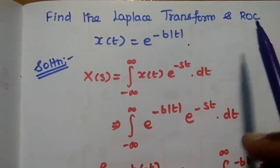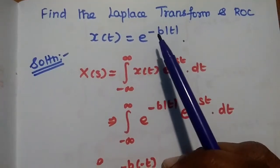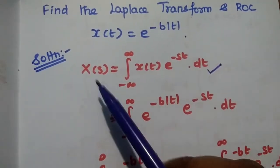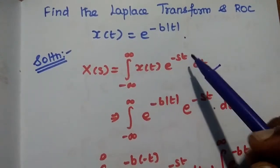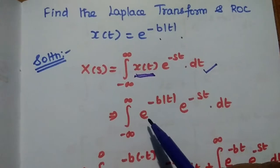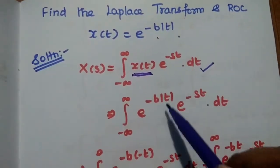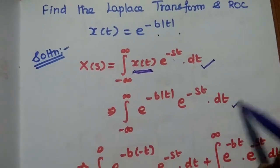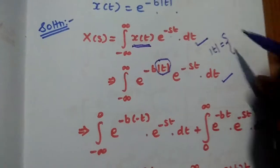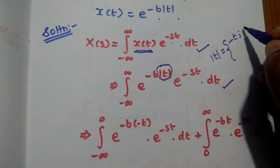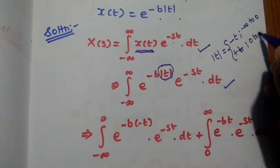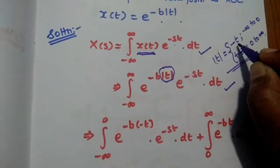The next problem is: find the Laplace transform and ROC of x(t) = e^(−b|t|). The first step is to write down the Laplace transform equation X(s) = integral of x(t)e^(−st)dt. We replace x(t) with the given signal: e^(−b|t|)e^(−st)dt. Since we have the modulus of t, |t| equals −t when the limit is from −∞ to 0, and +t when the limit is from 0 to +∞.